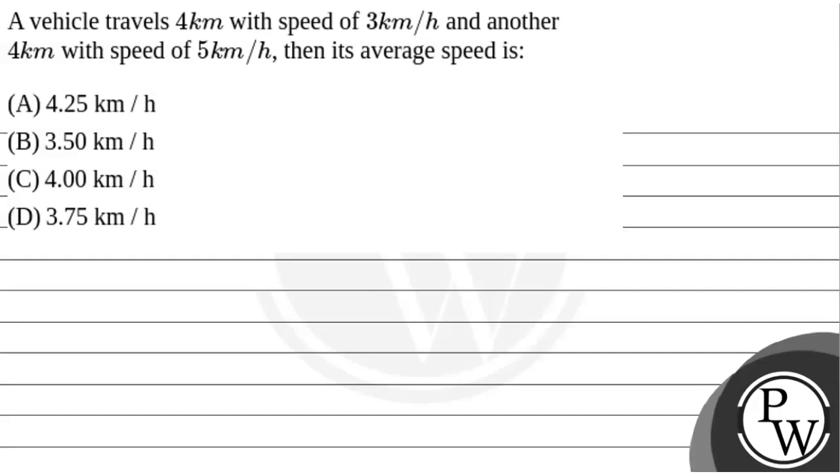Let's see the question. A vehicle travels 4 km with speed of 3 km per hour and another 4 km with speed of 5 km per hour. Then, the average speed is.